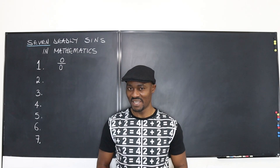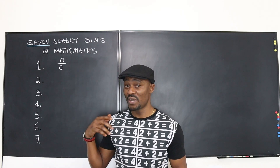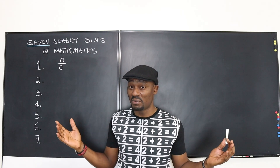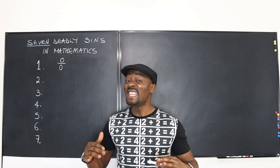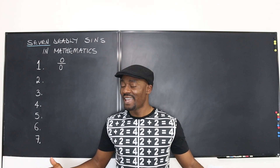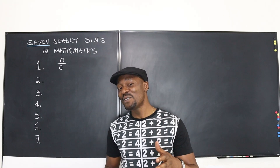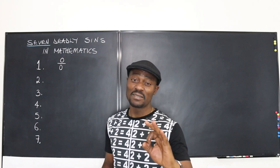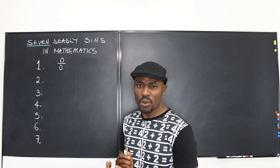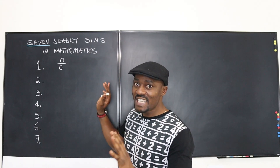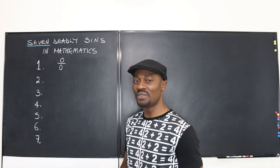Hello everyone and welcome to another video. If you ever catch yourself writing zero over zero as part of the solution of a math problem, you want to take a break, because that's a sin — it is not allowed, it is indeterminate, and it has six children that you want to avoid also. In this video I'm going to show you the kind of math expressions you cannot write, the kind of answers you cannot get — they're called the deadly sins of mathematics, always indeterminate. Let's get into the video.